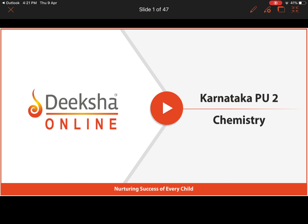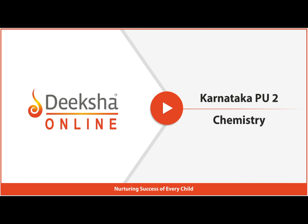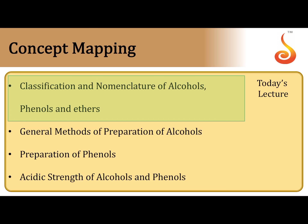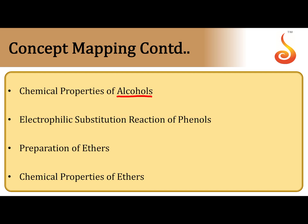Hello children, welcome to Deeksha online. Today I am going to explain the second chapter from organic chemistry, that is alcohols, phenols and ethers. Topics to be covered in this chapter: classification and nomenclature of alcohols, phenols and ethers; methods of preparation of alcohols; methods of preparation of phenols; acidic strength of alcohols and phenols; relative acidic strength; chemical properties of alcohols; electrophilic substitution reactions of phenols; preparation methods of ethers; and chemical properties of ethers.